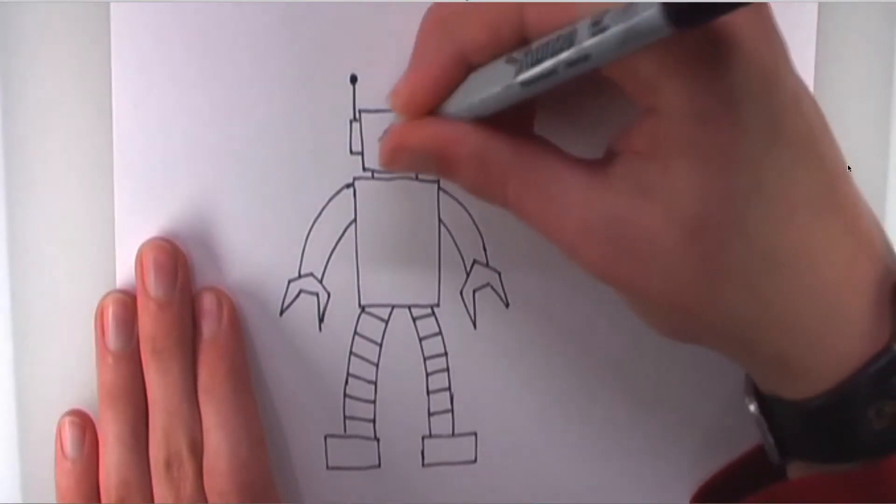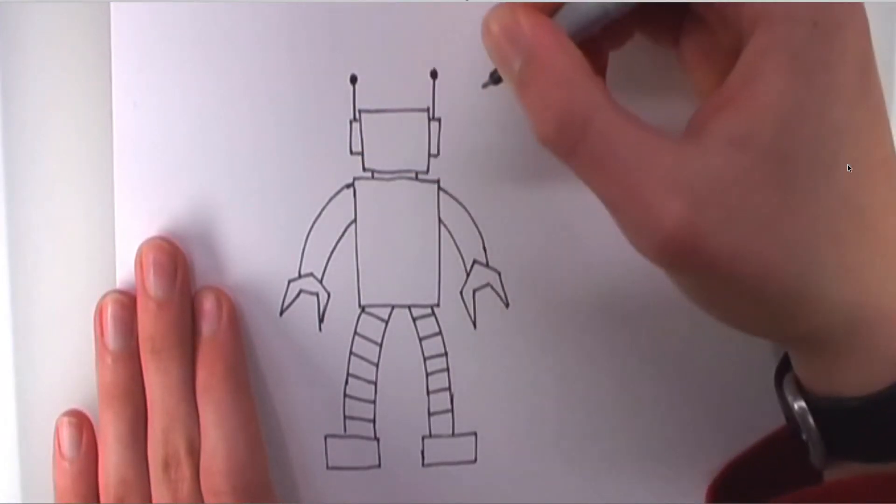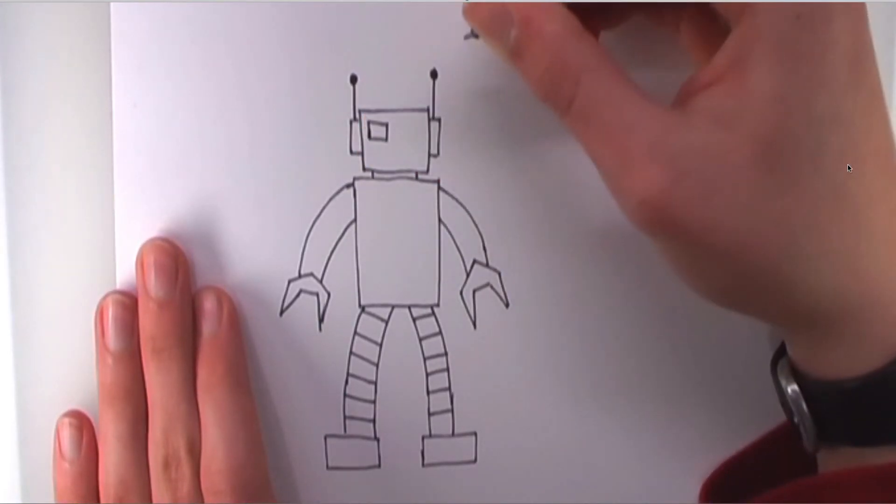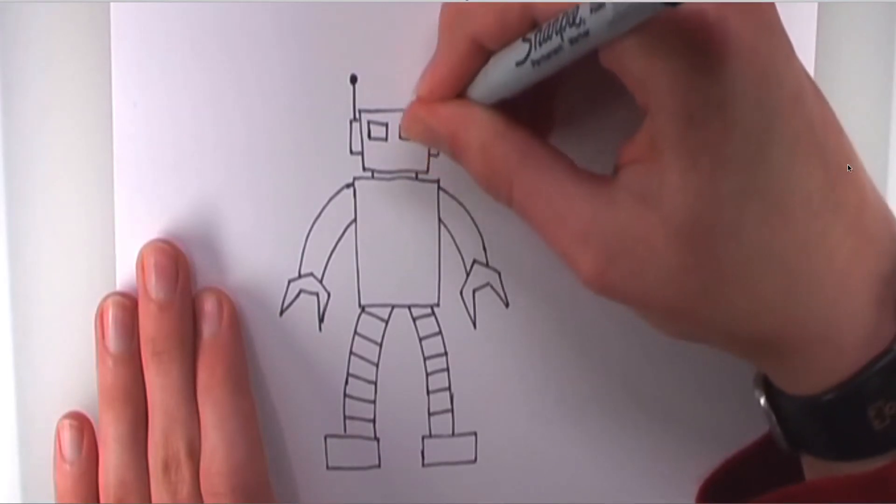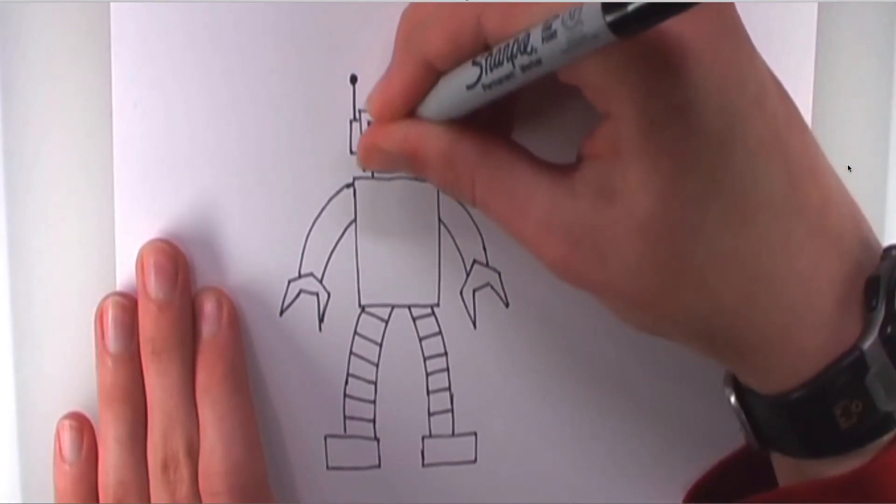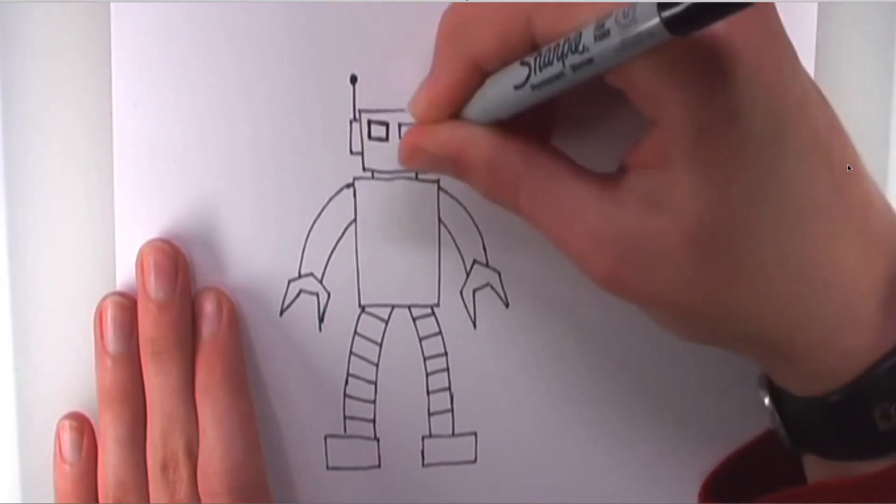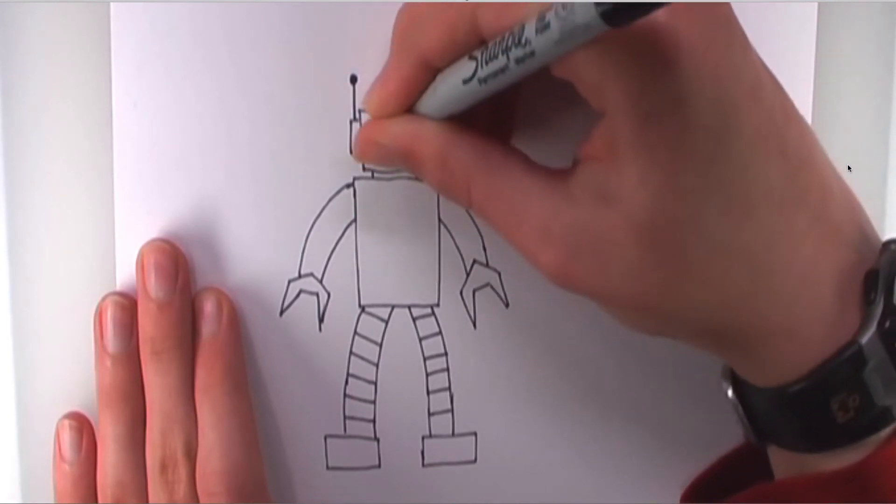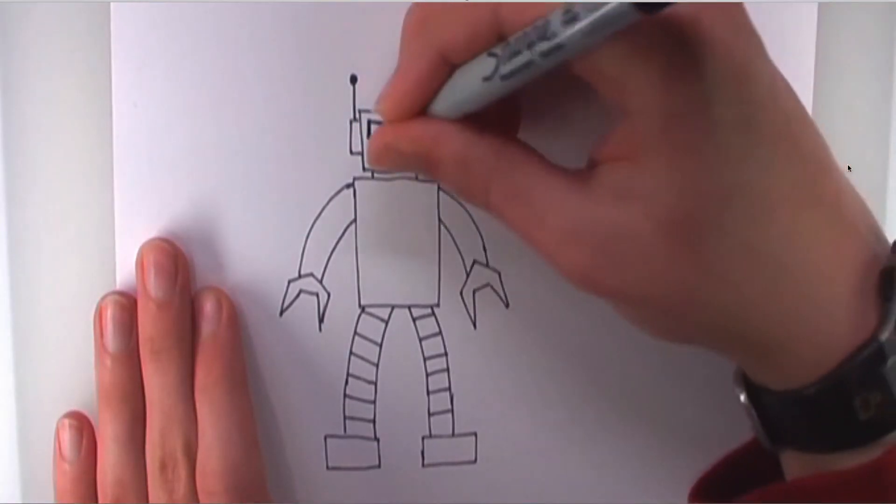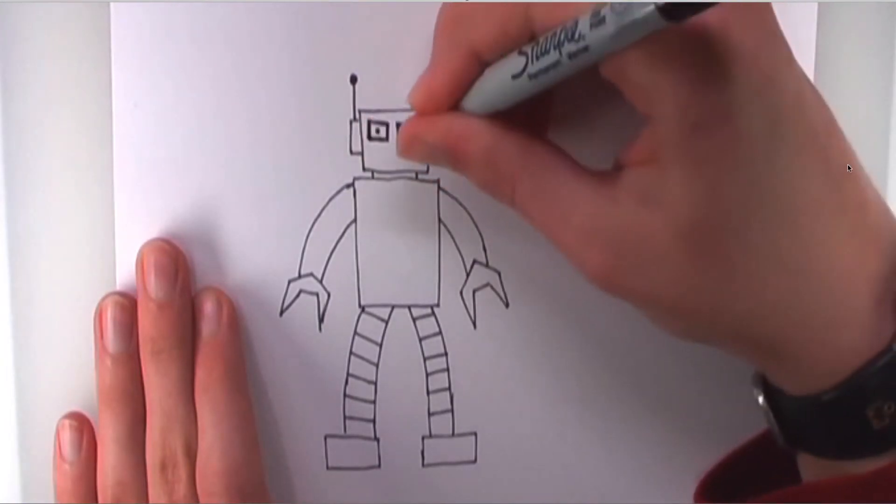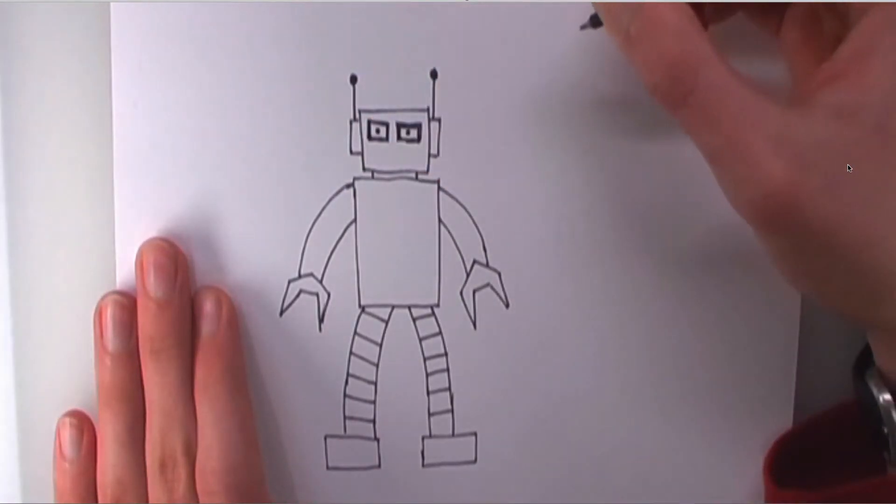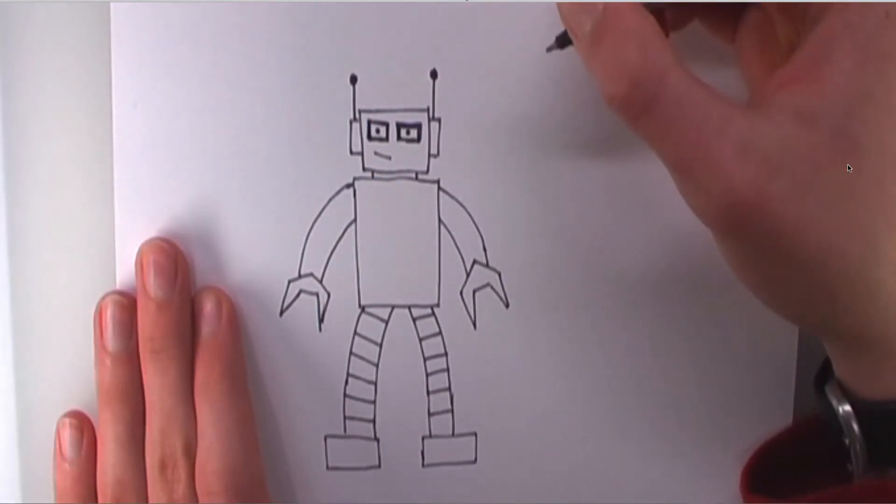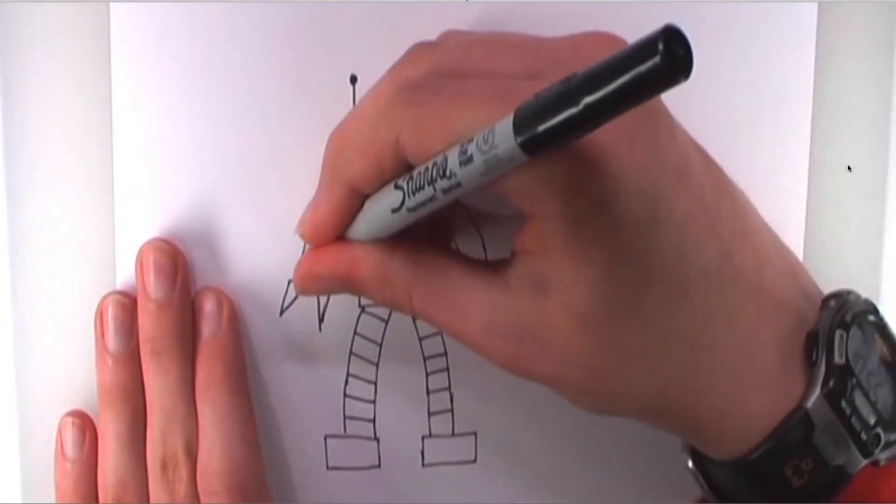On the face, we're going to add, on the left and right sides, some horizontal rectangles. And, I think I'm going to darken these lines to give this robot a little more depth. Inside, we can put some pupils. And, these don't have to be too robotic.